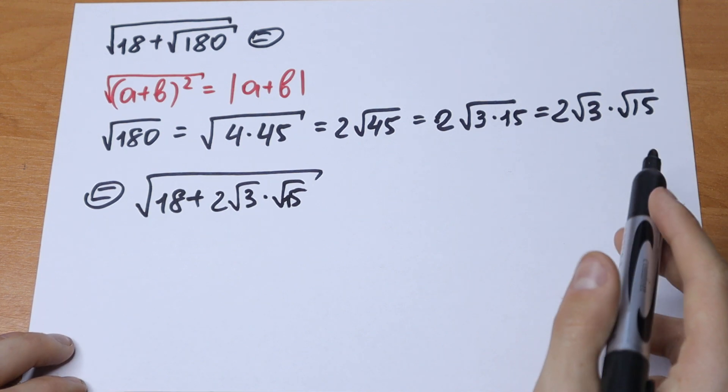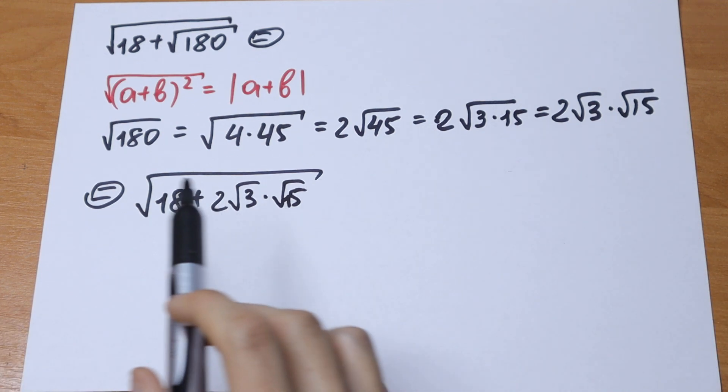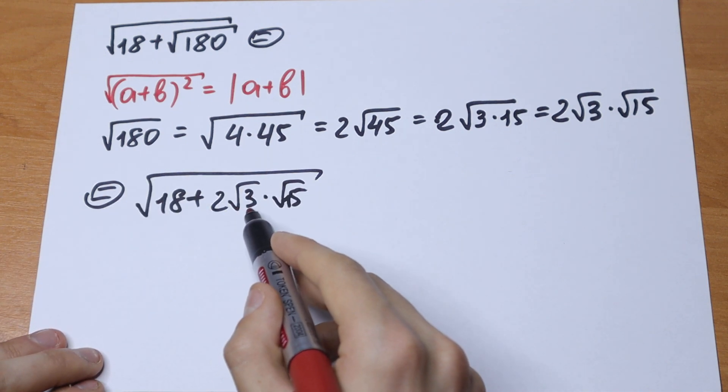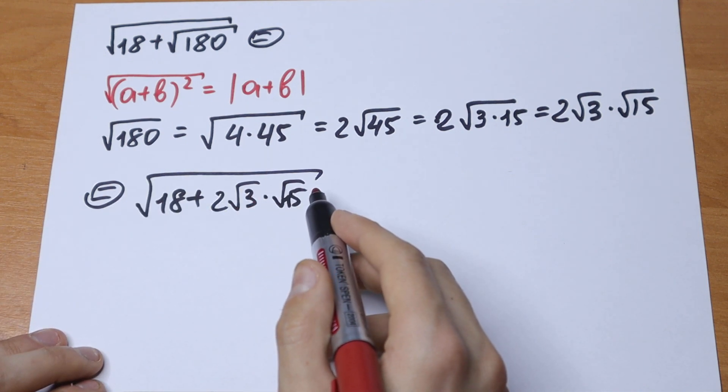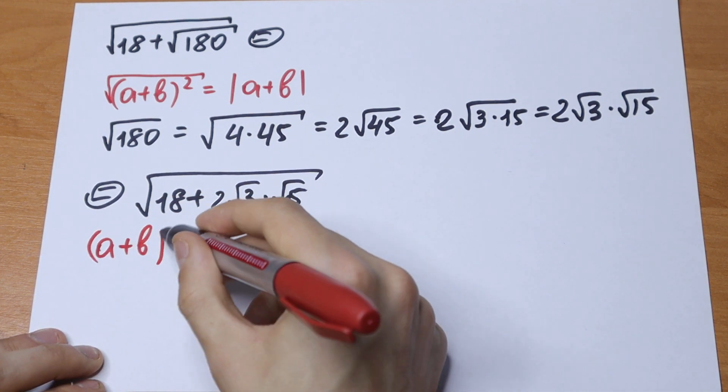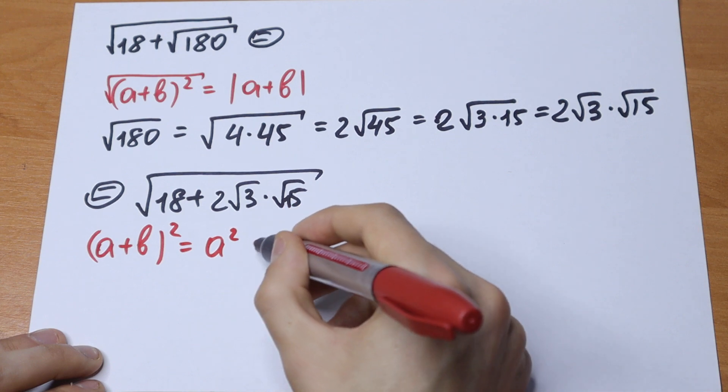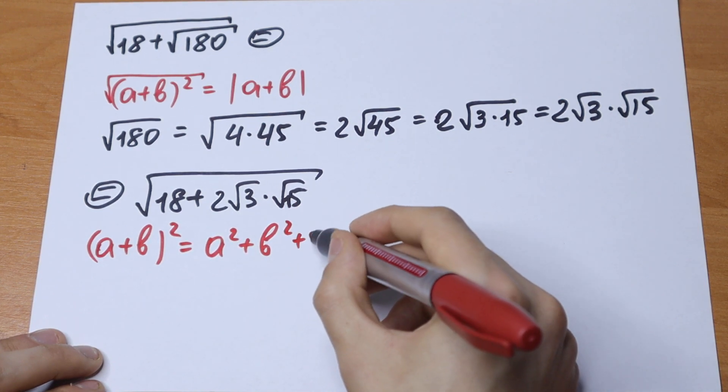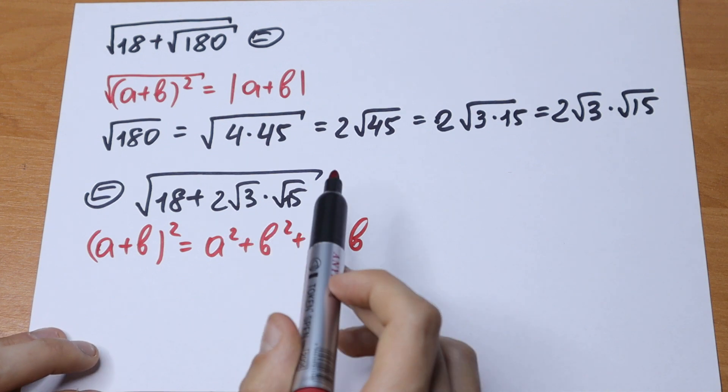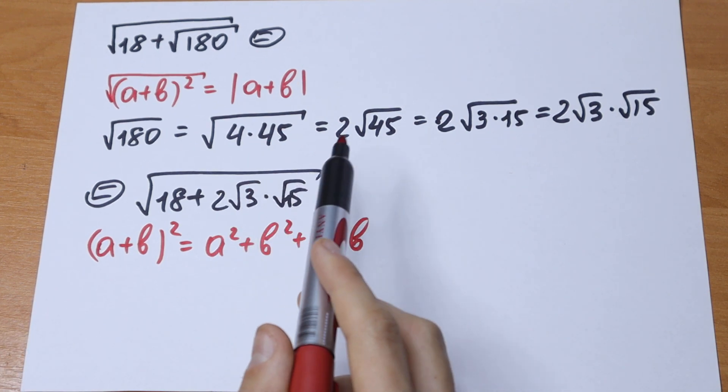We have a really good situation because we have 2 times - this will be our a and this will be our b, because we know that (a+b)² equals a² plus b² plus 2ab. So this is a good situation where these will be our a and b.